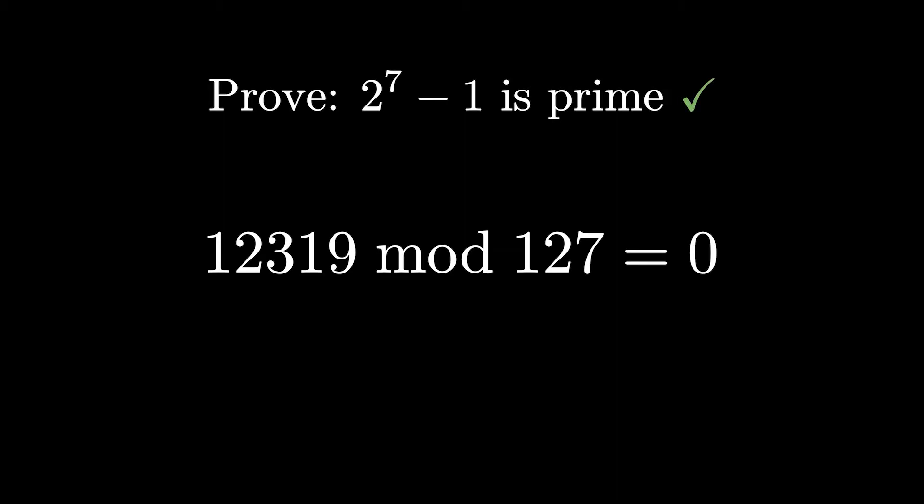So yeah, 2 to the 7 minus 1 is indeed prime. Now, this test is great for proving primality, but it takes a lot of computing power, and softwares like GIMPS has their fair share of errors. But there's another test that helps us find potential primes with much less errors. It's called the Fermat Probable Prime Test. It finds probable primes, or PRPs, which are most likely primes. This allows us to have a smaller pool of possible prime numbers that have a better chance of actually being prime. So, how does this work?